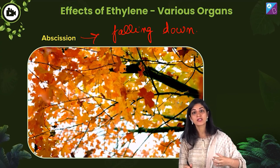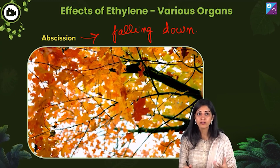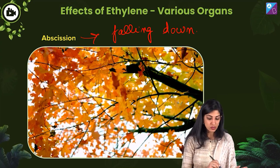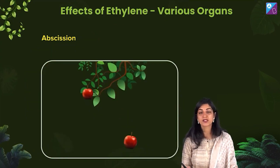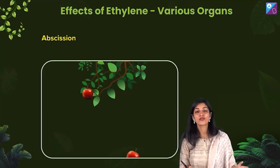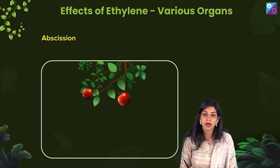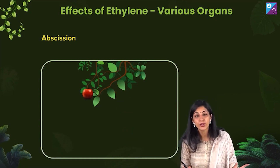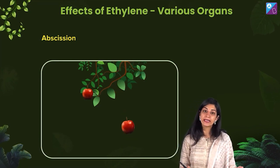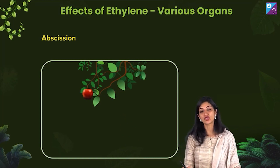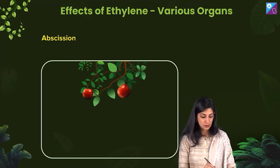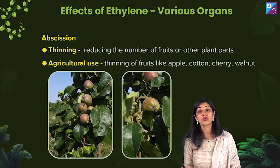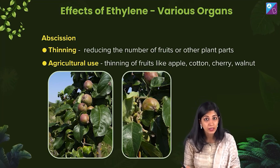So yellowing of leaves, falling of leaves, falling of flowers — that is all abscission. You can see a fruit falling down after it is completely ripened and is ready for consumption. So that is abscission; it is just a part of the life cycle.